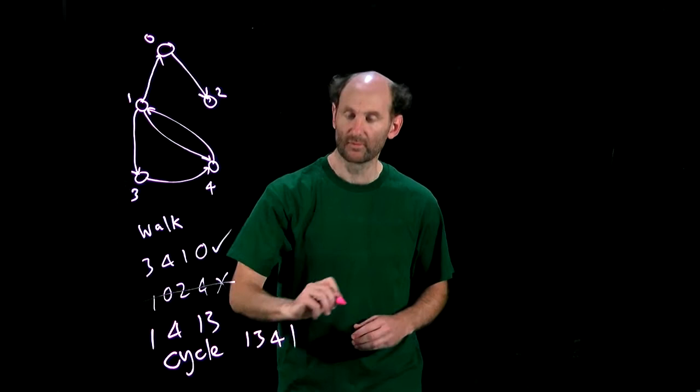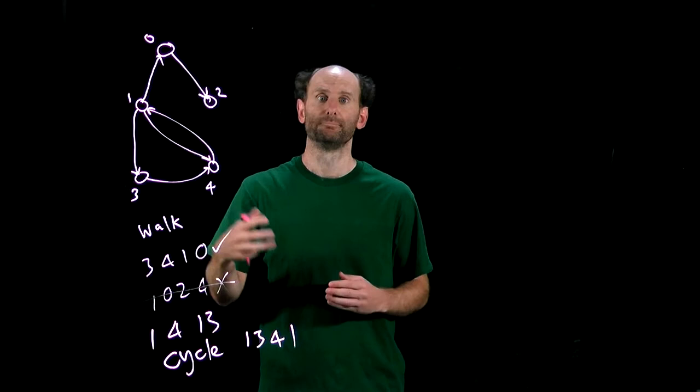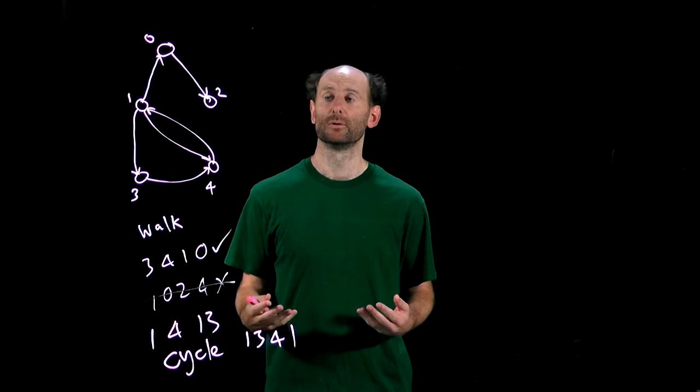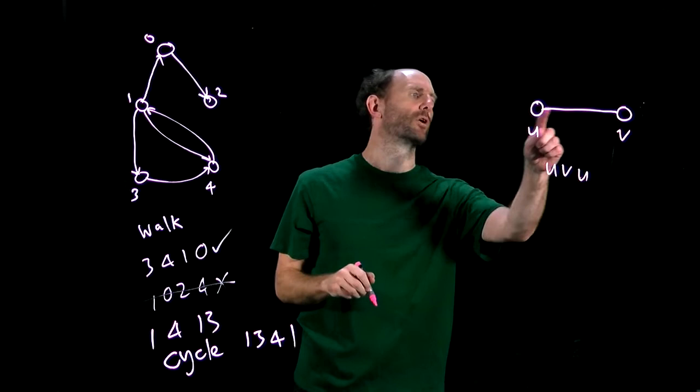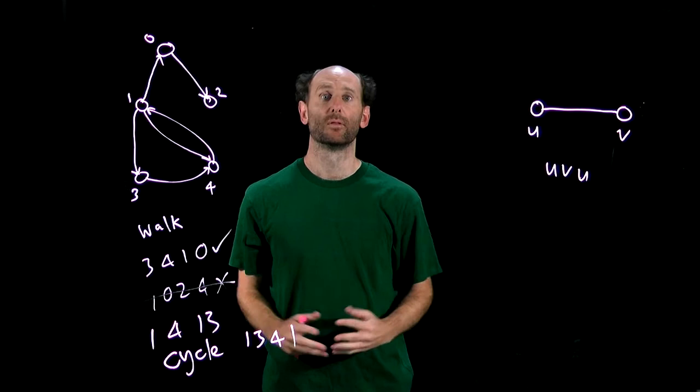Or simply 1, 4, 1 is also a cycle of length 2. A path consisting of a single node is not considered a cycle. Notice that in an undirected graph a walk with the form U-V-U where we've just gone back and forth along the same edge is not considered a cycle. So the smallest cycle in a graph is of length 3.